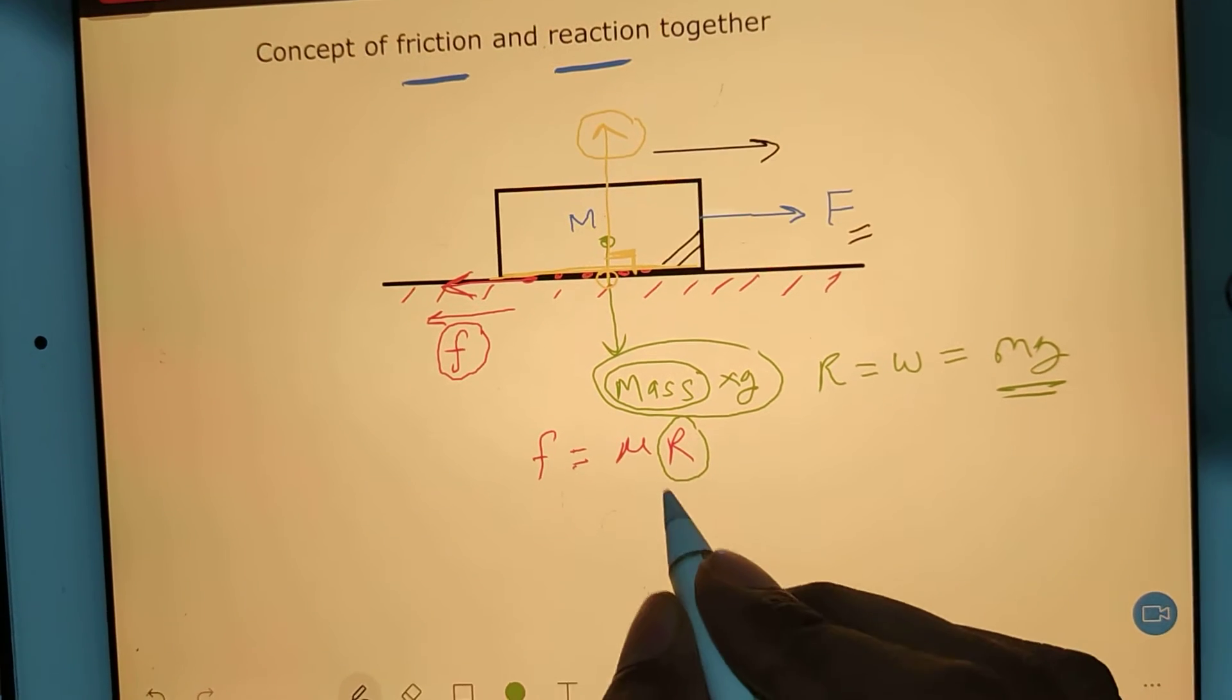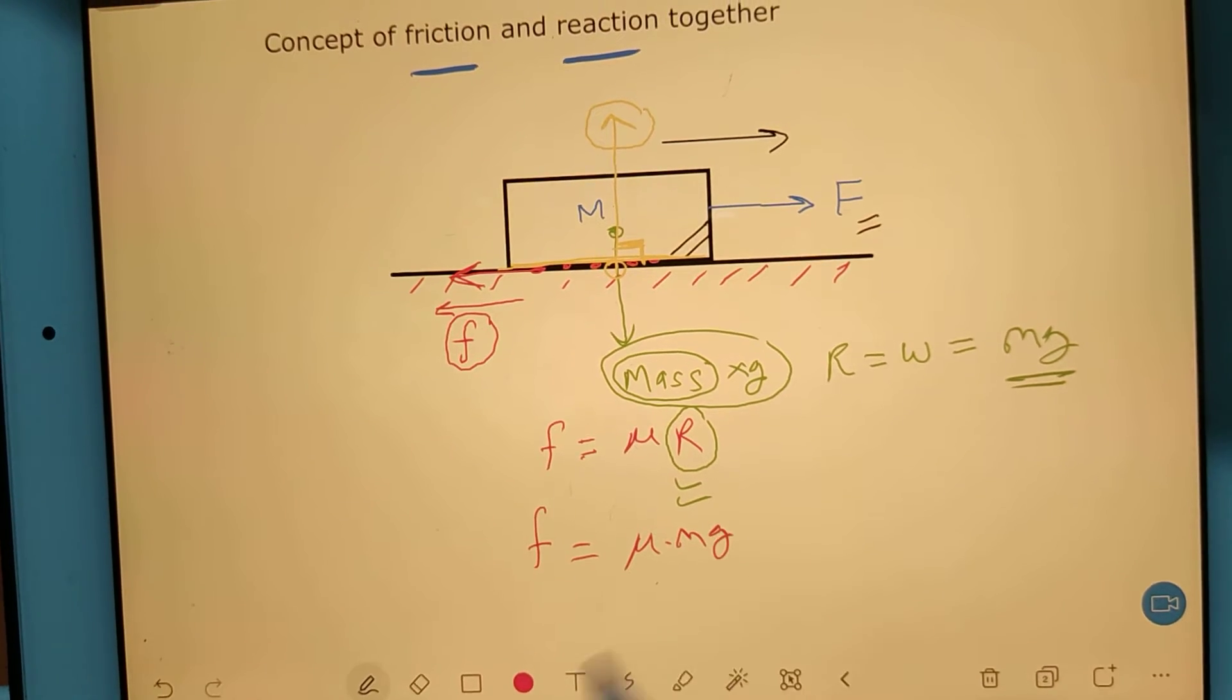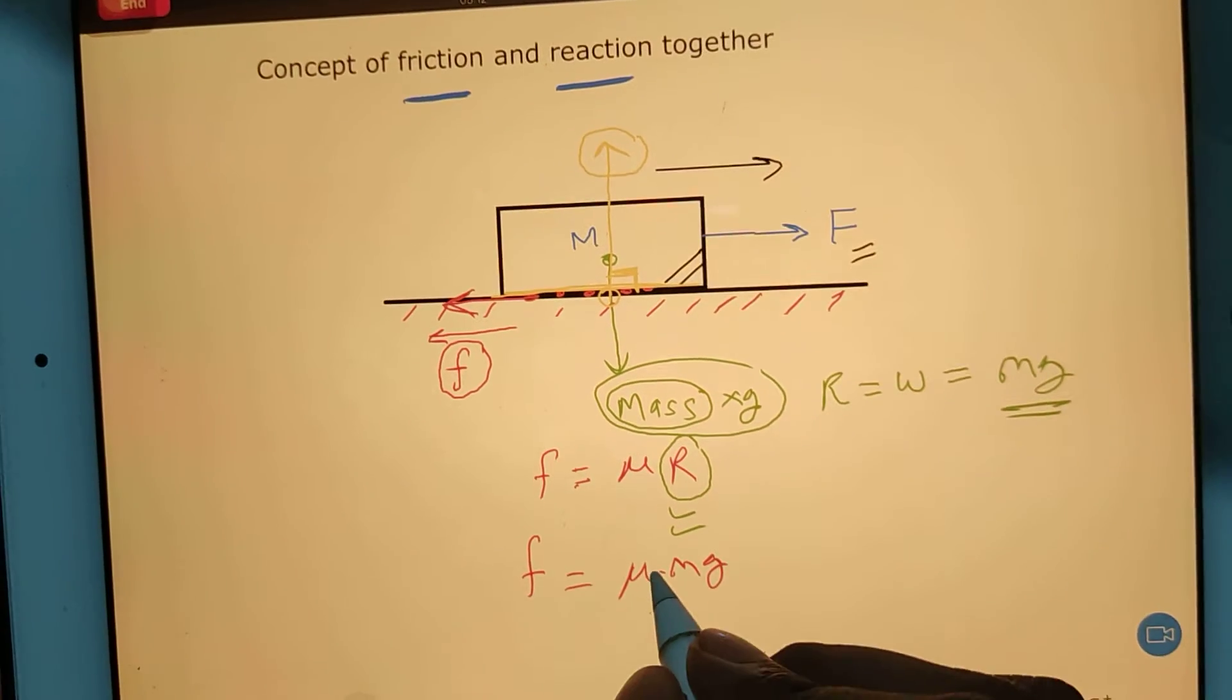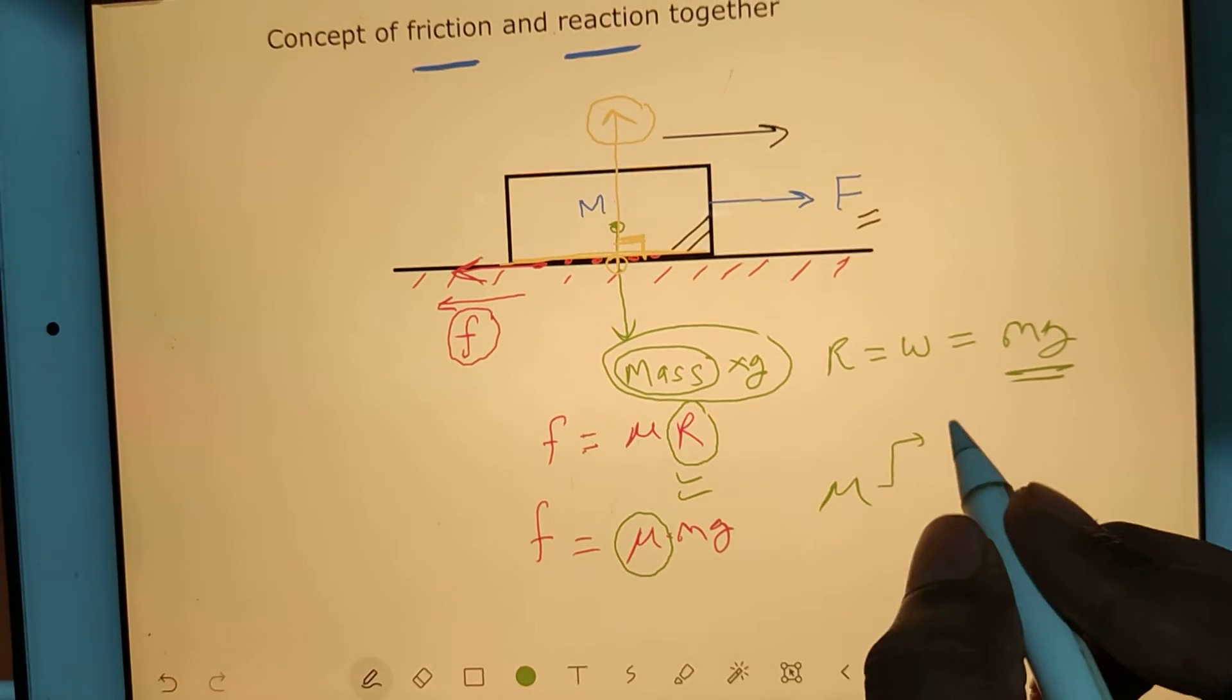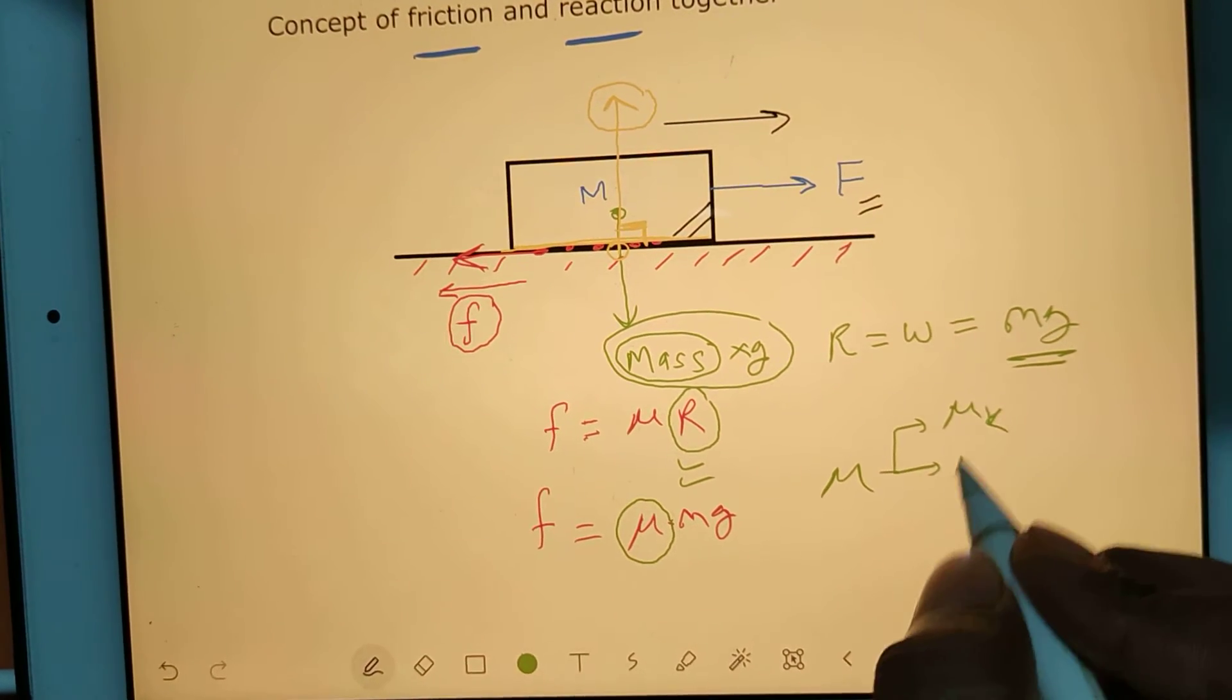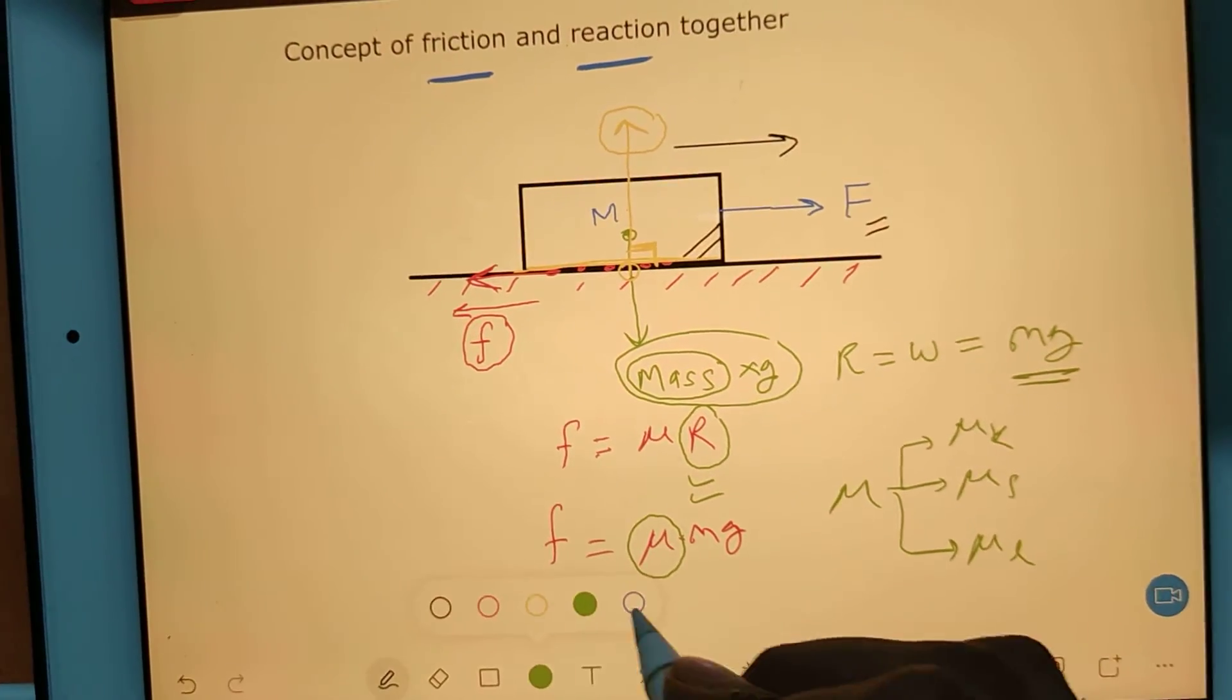So this mg I can replace here, so my friction force formula will be μ into mg. But now, as in the last class I explained, this μ can hold the value μₖ or μₛ or μₗ.